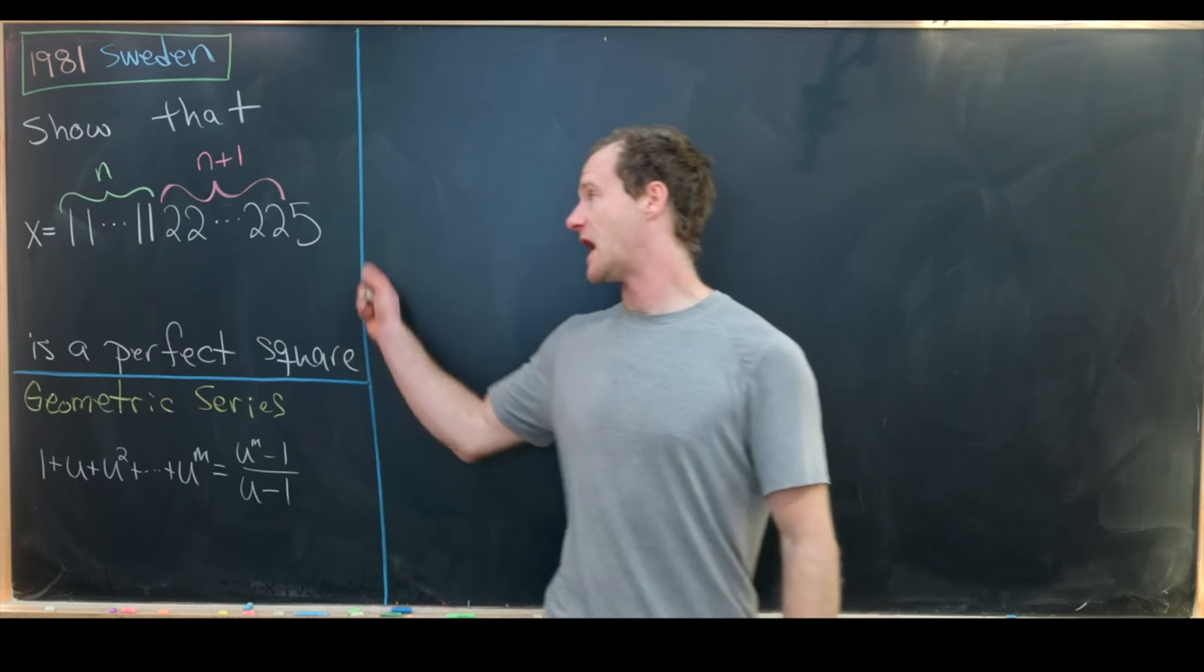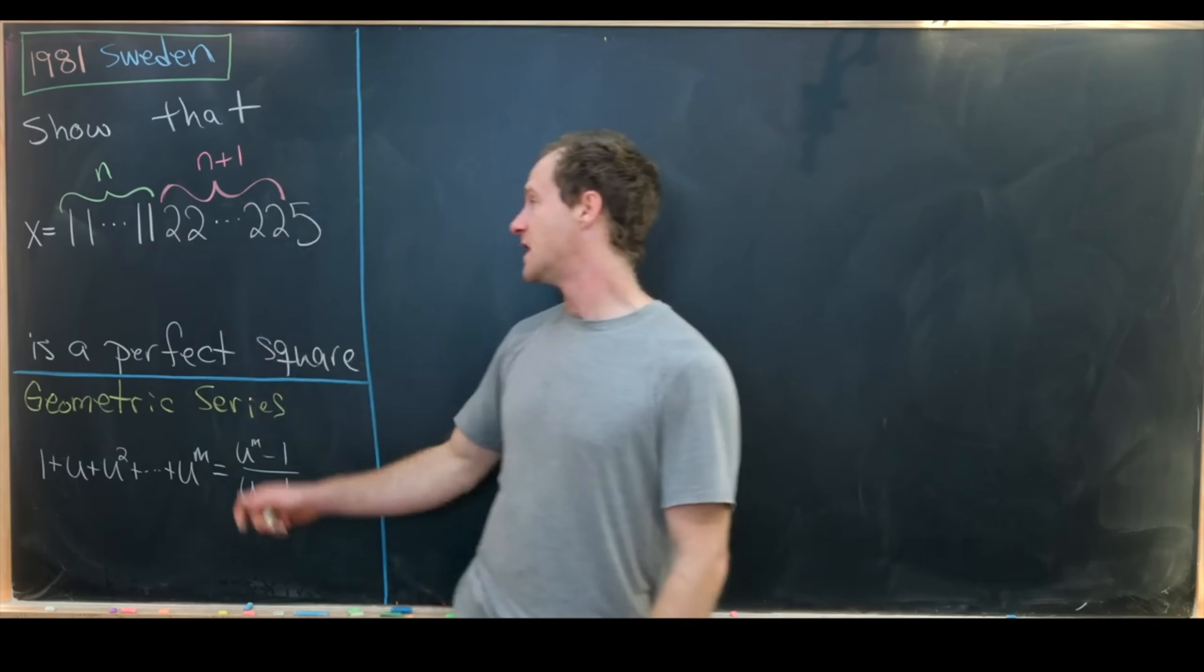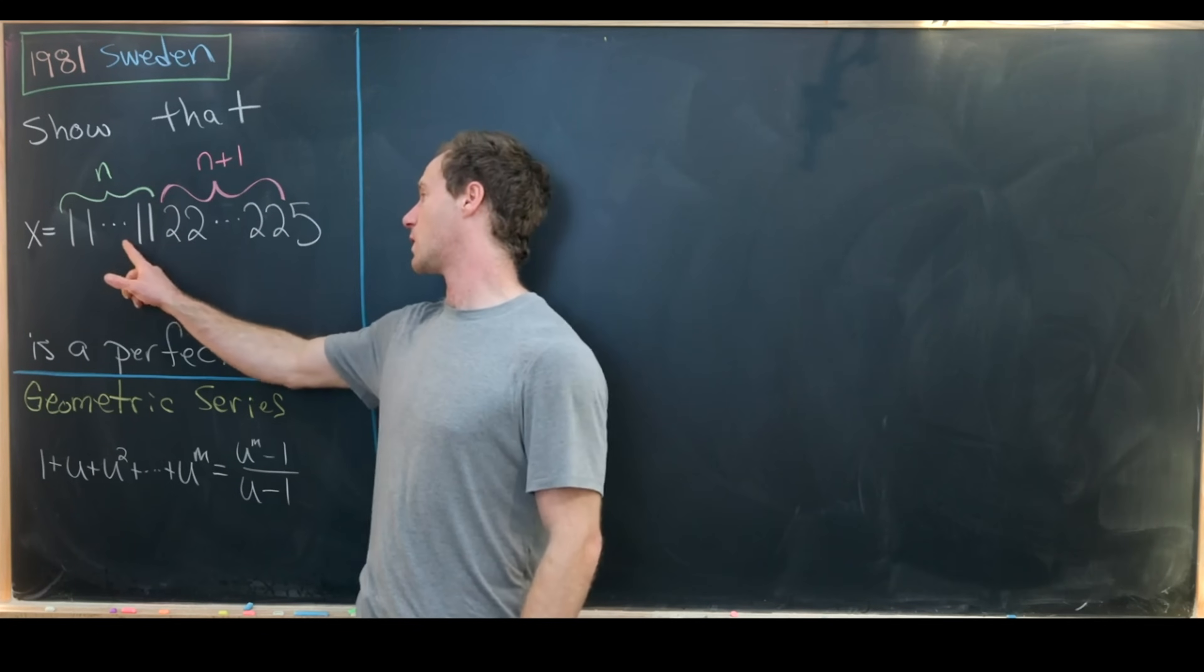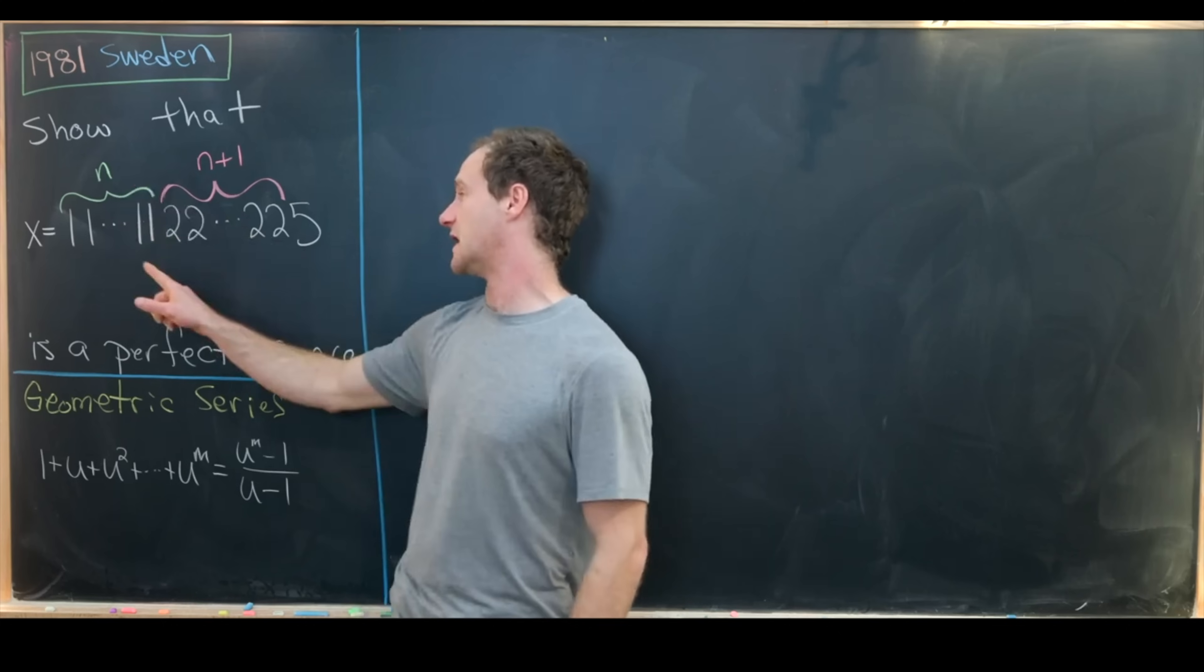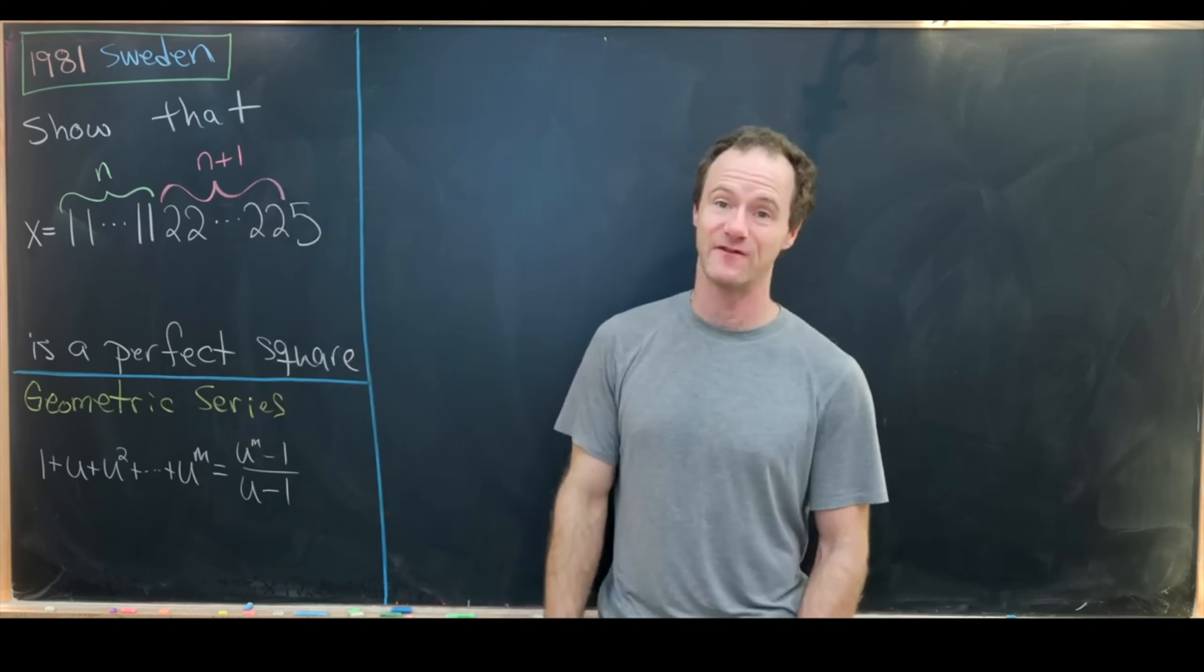So our goal is to show that the following number is a perfect square. Let's see what this number is. I have named it x just for ease of writing, and it's equal to 1111... n times, 2222... n+1 times, ending in a 5.